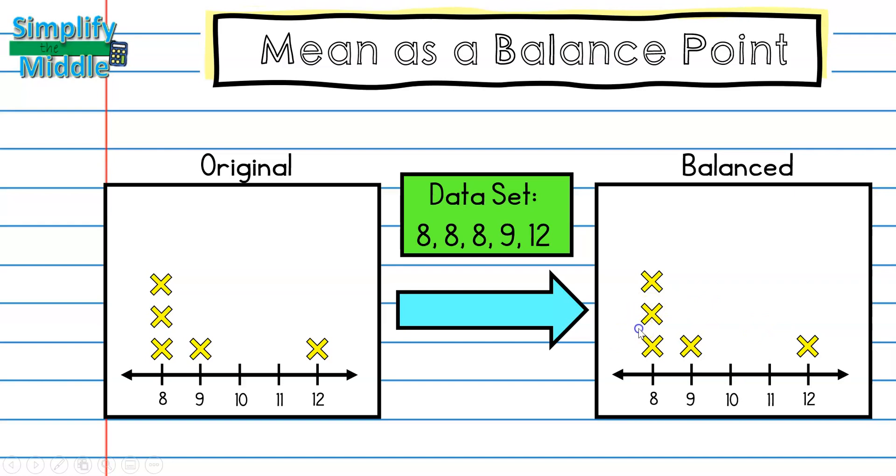So first I have 8, so I'm going to move it over 1 to 9. Then I need to go to the right side of my data. I have 12, I'm going to move it over 1 to 11. I'm just going to repeat this process. So this time 8 is my outermost point on the left, so I'll move it to 9.